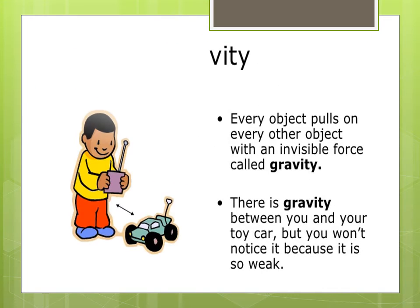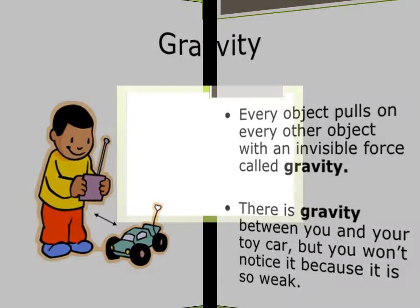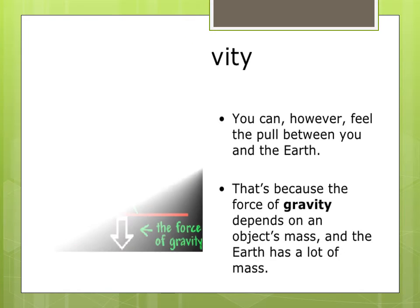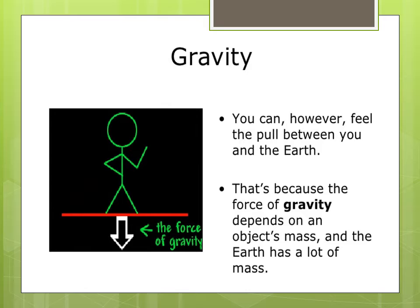Every object pulls on every other object with an invisible force called gravity. There is gravity between you and your toy car, but you won't notice it because it is so weak. You can, however, feel the pull between you and the earth. That's because the force of gravity depends on mass of the object and the earth has a lot of mass.